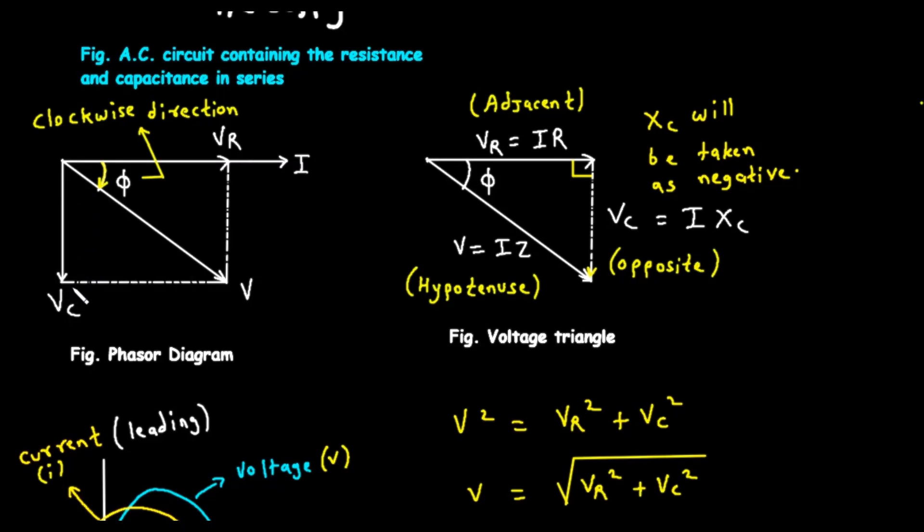The total voltage of the supply V must be the combination of these two individual voltages. To find it, we add the phasors VR and VC together using the tip-to-tail method. Imagine sliding the VC phasor so its tail starts at the tip of the VR phasor. The total voltage V is then the arrow drawn from the very beginning, the tail of VR, to the very end, the tip of the relocated VC. This forms a right-angled triangle, which we see in the next figure, Fig. Voltage Triangle.